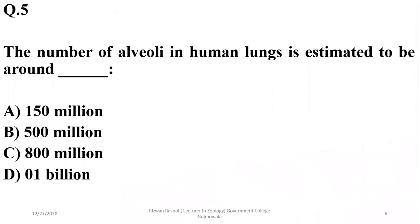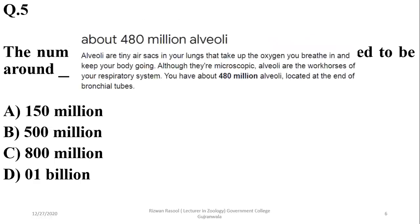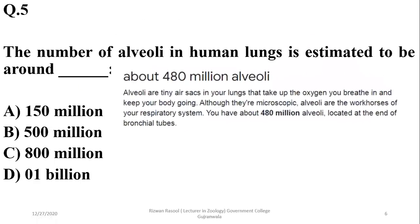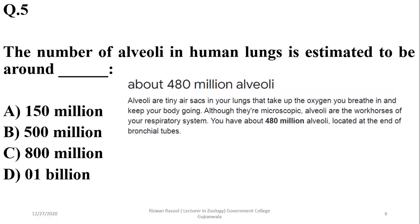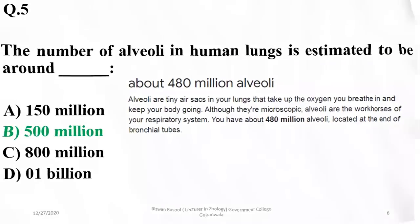Question 5: The number of alveoli in human lungs is estimated to be around 500 million. If you Google this exactly, it gives 480 million alveoli. So we will choose the beta option.